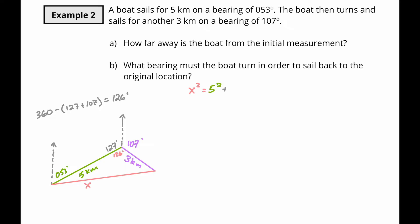So we're going to have x squared is equal to 5 squared plus 3 squared minus 2 times 5 times 3 cosine 126.